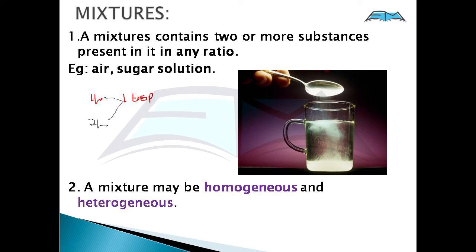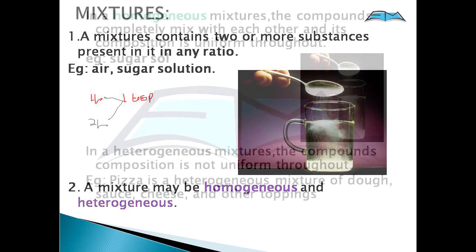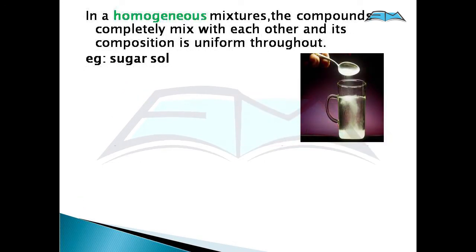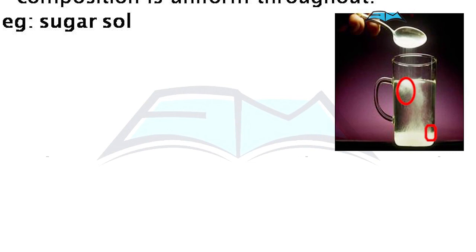A mixture may be homogeneous or heterogeneous. In a homogeneous mixture, the components are completely mixed with each other and the composition is uniform throughout. For example, sugar solution — if I take solution from one part or another part, the composition will be the same.